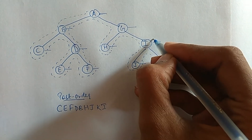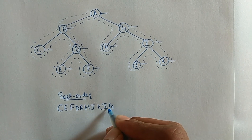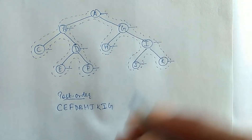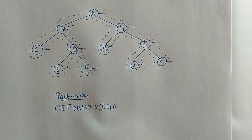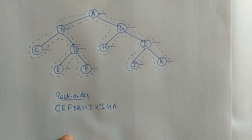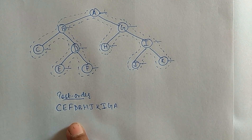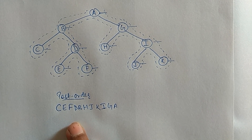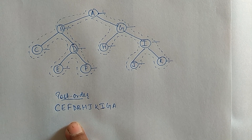Then node G, then node H, and finally node A. So guys, the post-order of the given tree is C, E, F, D, B, H, J, K, I, G, A. And this is the simplest way to find out the pre-order and post-order of a binary tree.